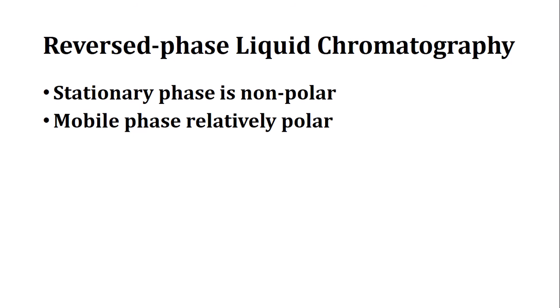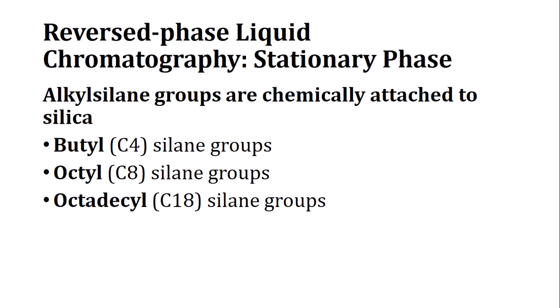In reversed phase liquid chromatography, the stationary phase is non-polar and the mobile phase is relatively polar. It is a type of bonded phase liquid chromatography. Stationary phases are represented as C4, C8, or C18, where alkylsilane groups are chemically attached to silica. The alkyl groups are free to contact analytes and reduce the polarity of the stationary phase.